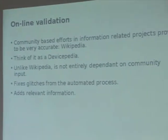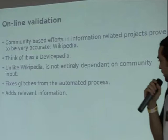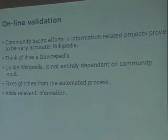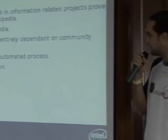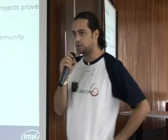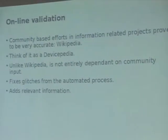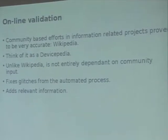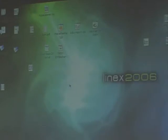For online validation, community-based efforts in information-related projects like Wikipedia seem to be very accurate. Think of it as a device-pedia. Unlike Wikipedia, it is not meant to be entirely dependent on community input — the automated process will clean the data, and any glitches or missing information can then be fixed by human intervention. I can show a prototype of one of these tools to gather data.